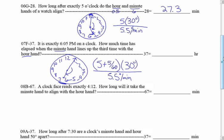I noticed a word I missed — the problem asks when they line up for the third time. We don't have to change what we've done; that's how many degrees it takes to reach the first alignment. Then it has to go around a full 360 degrees for the second time, and another 360 degrees for the third time, so just add those two extra circles. Since we're dividing degrees by degrees per minute we get minutes, but the answer is asked in hours, so divide by 60 — we get approximately 2.64 hours.